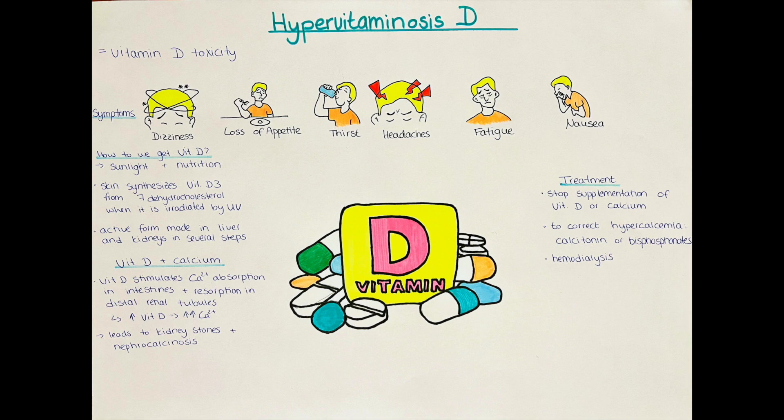To summarize, the effects are many and the organ systems affected are neurologic, cardiovascular, gastrointestinal, and the urinary tract including the kidneys. Treatment focuses on stopping all potential supplements that may contain vitamin D or calcium, since vitamin D toxicity usually results from taking too much vitamin D without proper monitoring by a physician.